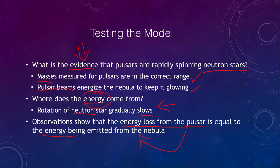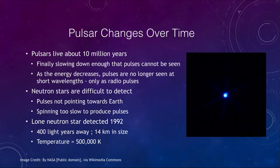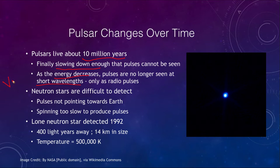How do these pulsars change over time? Pulsars can live for about 10 million years — a relatively decent lifespan. Eventually they slow down enough that the pulses can no longer be seen. For something like the Crab Pulsar, we can see it in visible light, and it actually pulses on and off. For older pulsars that have slowed down, we are unable to see them in the visible, but we can still see them as radio pulses. Eventually the pulsars will slow down and not be able to be detected at all.